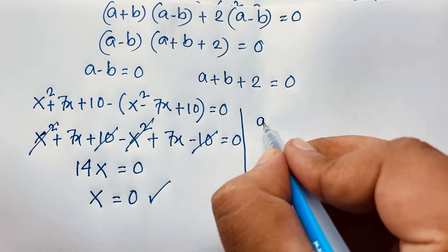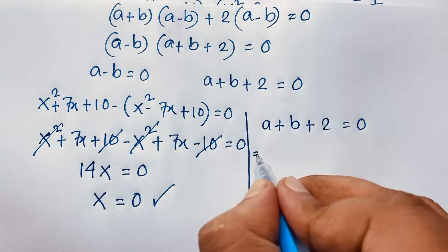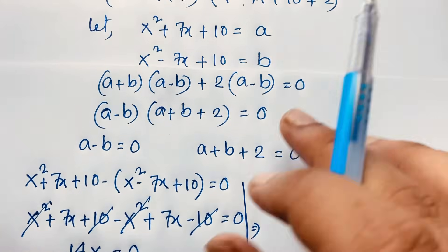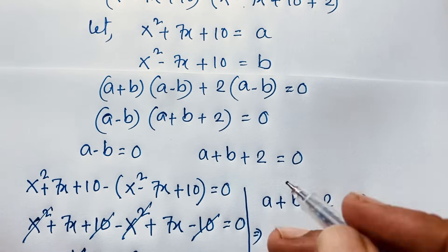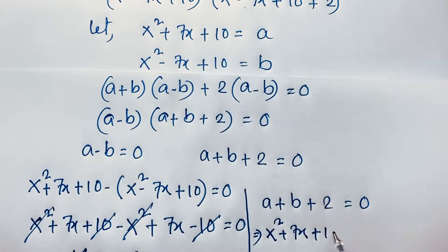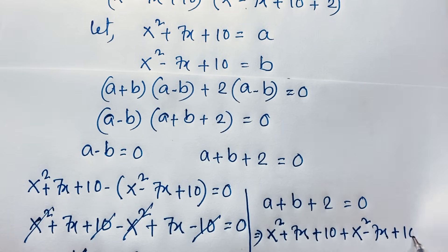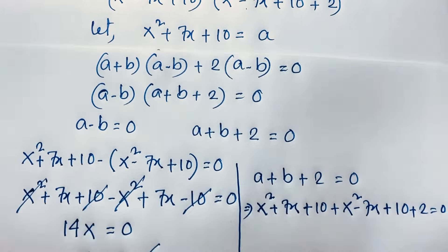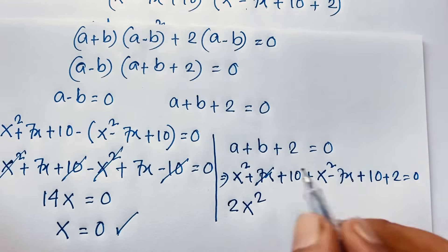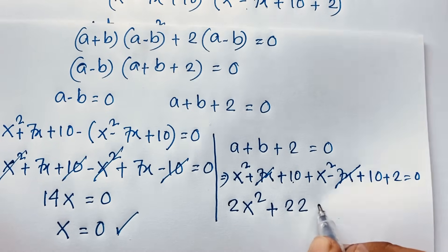The other case: a+b+2 = 0. Substituting a = x²+7x+10 and b = x²-7x+10: (x²+7x+10) + (x²-7x+10) + 2 = 0. The 7x terms cancel, x²+x² gives 2x², and 10+10+2 gives 22, so 2x²+22 = 0.